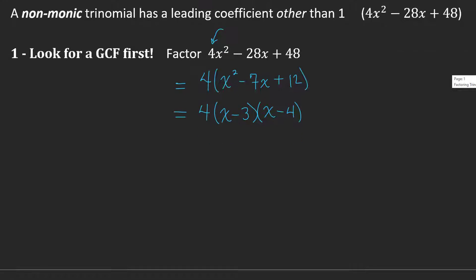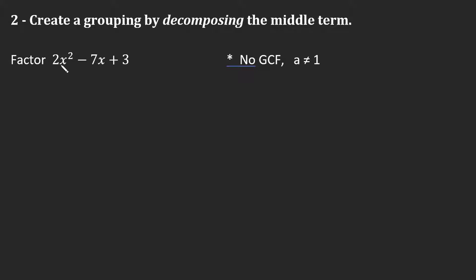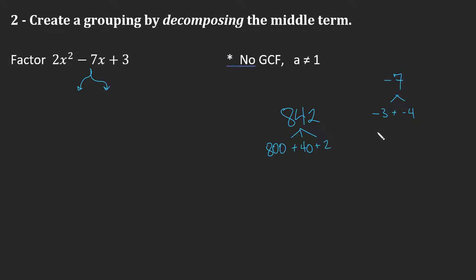But it's not always that easy — sometimes there's no GCF. In this case, I have a non-monic trinomial with no GCF and A is not 1, so I'm going to create a grouping by decomposition: I'm going to break apart the negative 7 into two pieces. The negative 7 could come from many decompositions — for example, negative 3 plus negative 4, or negative 1 plus negative 6, or positive 10 plus negative 17. The step-by-step decomposition process tells us which one to use.